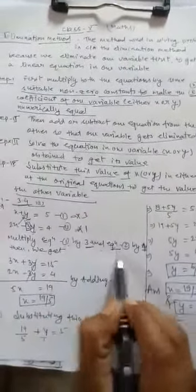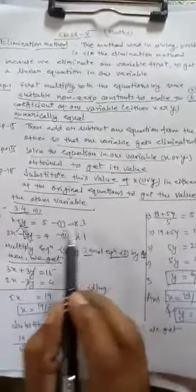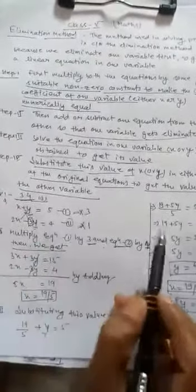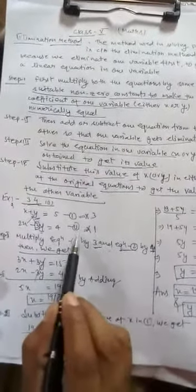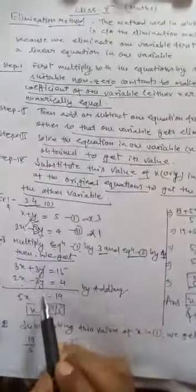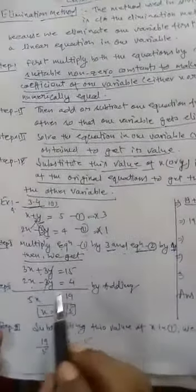To make the coefficients of Y equal in both equations, we multiply equation one by 3 and equation two by 1. Multiplying equation one by 3 gives: 3X plus 3Y equals 15. Multiplying equation two by 1 gives: 2X minus 3Y equals 4. Now the coefficient of Y is equal in both equations — our aim is completed.